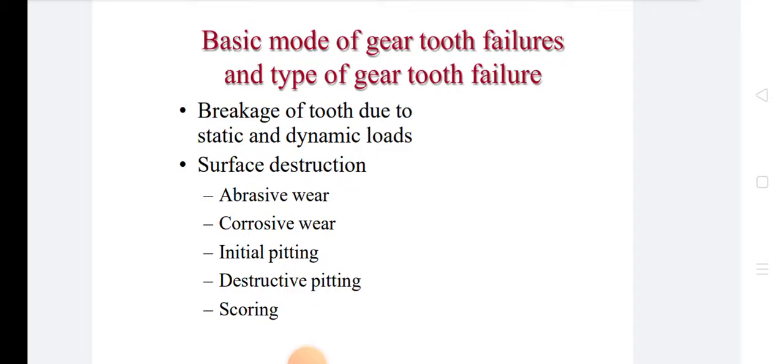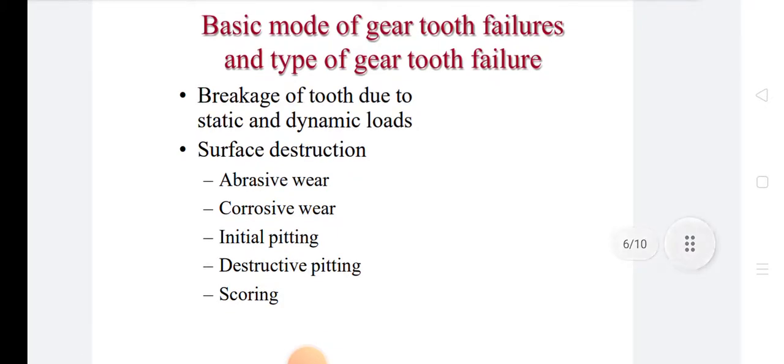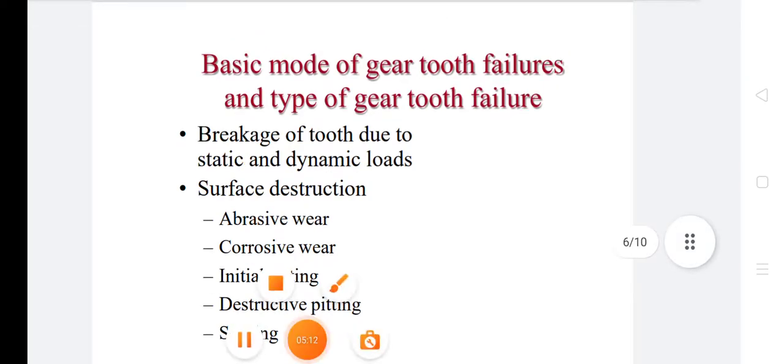If the total respective load, that is sum of static load and dynamic load on the gear tooth, is greater than the beam strength of the gear tooth, then the gear tooth will fail in the bending. This failure can be avoided by addressing the parameters such as module and face width of the gear design so that the beam strength of the gear tooth is more than the total repetitive load.